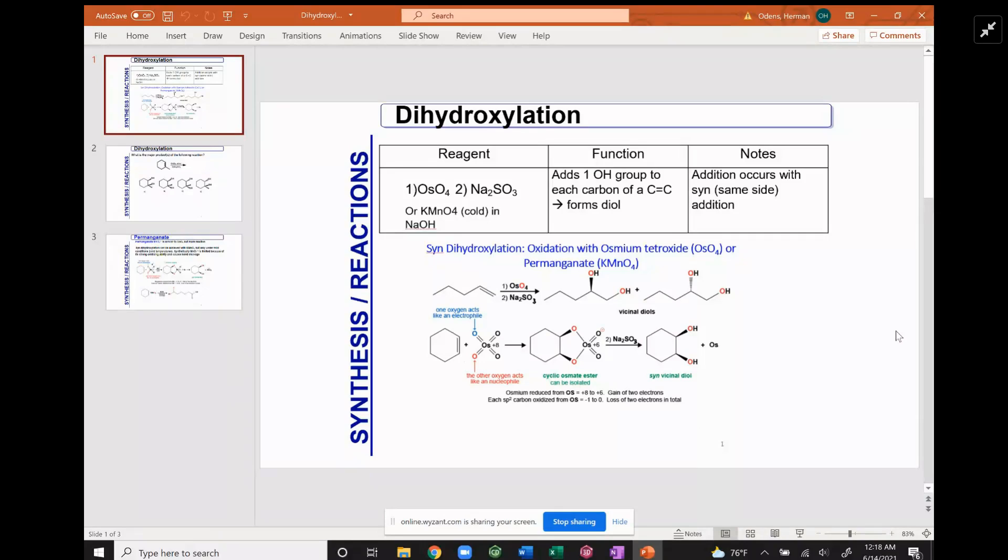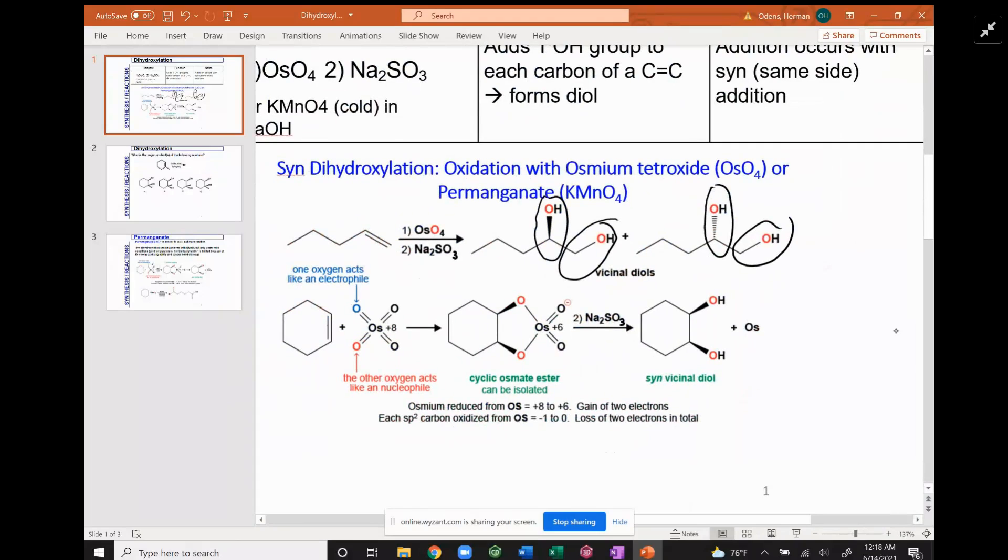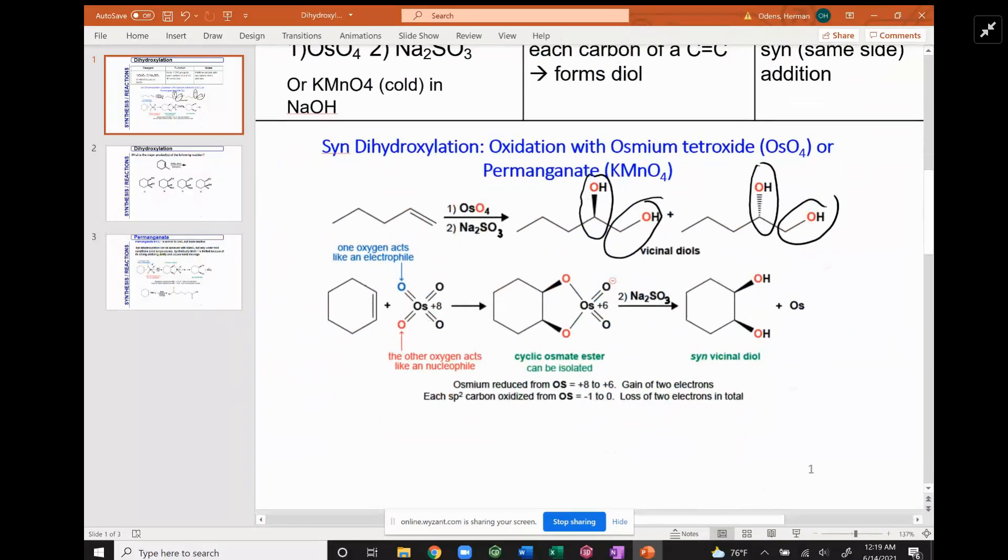So for dihydroxylation, you're expecting to have two hydroxy groups up or two hydroxy groups down. In this case, there's no chiral center, so the reaction will not show this bond here as wedge or up. Likewise, this will not show as dash or down because there's no chirality there. But if you can make chirality, this is what's going to happen.